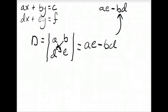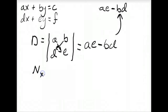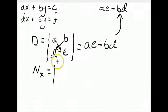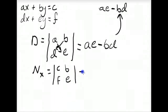The numerator for solving X can also be written using a determinant. Recall that the X numerator does not have X coefficients, so we replace the X coefficients A and D with C and F, which are from the right members. So NX equals the determinant with C, F on the left and B, E on the right. Expanding it the same way gives CE minus BF.